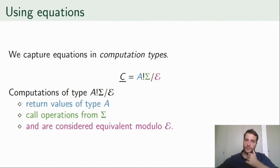This is where our work comes in. We transition to local theories by packing equations into computation types instead. A computation type now states the type of return values, the names and types of operations that may be called, and the equational theory.